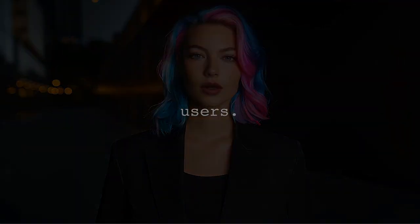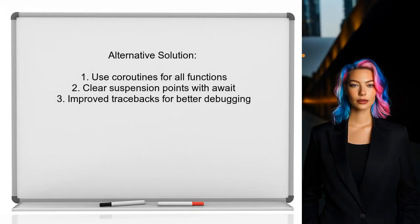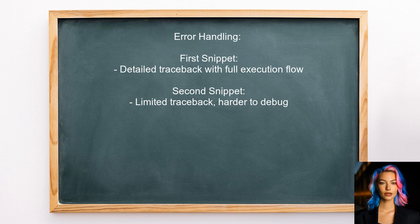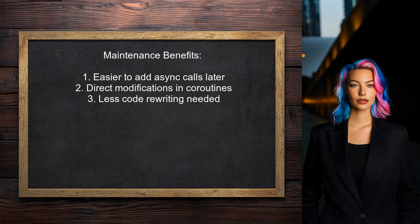Looking at answers from other users: one user suggests sticking with the first approach, where all functions are defined as coroutines. This method clearly shows where the code can be suspended with await, providing better tracebacks that illustrate the execution flow. If an error occurs in the deep coroutine, the first snippet gives a detailed traceback showing the entire call stack, whereas the second snippet only shows the error at the point of failure, making debugging harder. The first approach is also easier to maintain — if you need to add an async call later, you can do so directly in the coroutine without rewriting multiple parts of the code.